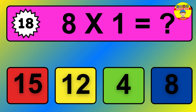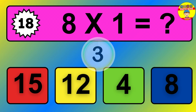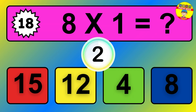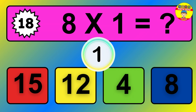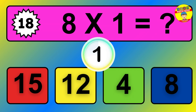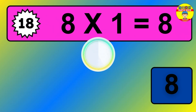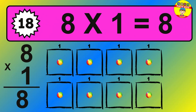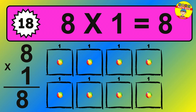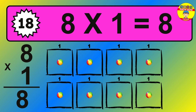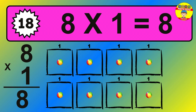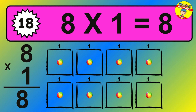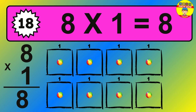Question 18. 8 times 1 equals what? The answer is 8 times 1 is 8. To calculate, we have 8 groups with 1 ball each one. So how many balls do we have? 8 balls.